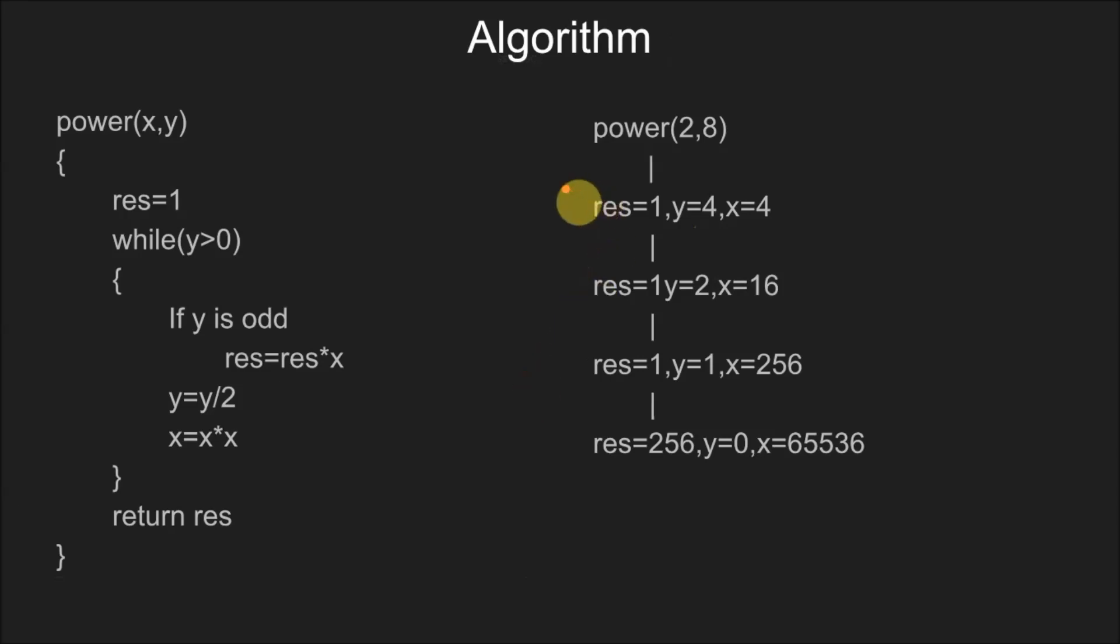The algorithm takes a function power with values x and y. We take a variable result that is initialized with 1, as the minimum value of y can be 0 and anything to the power 0 is 1.